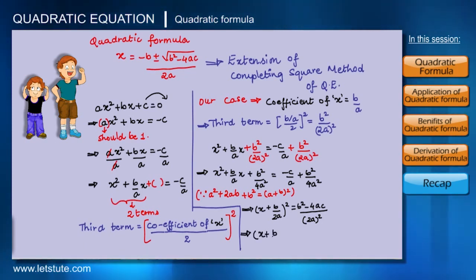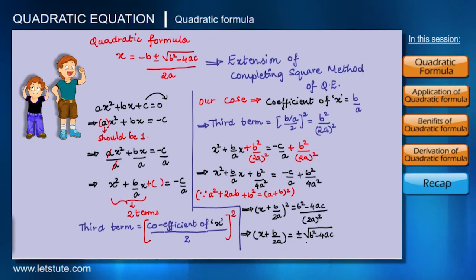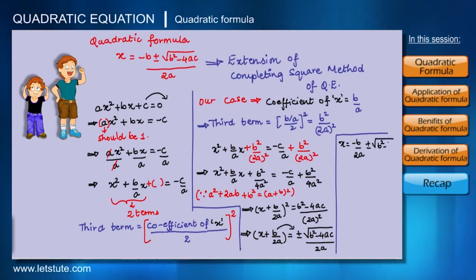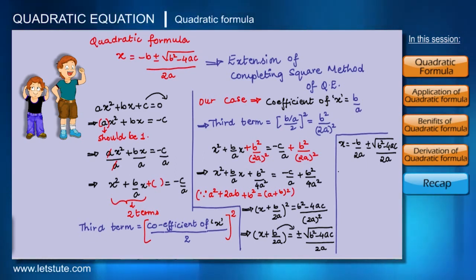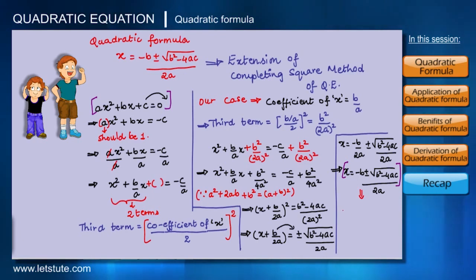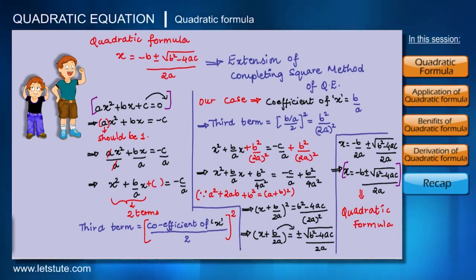Taking square root on both sides, we get X plus B/(2A) equals plus or minus square root of (B² minus 4AC) upon 2A. Taking B/(2A) to the other side, X equals minus B/(2A) plus or minus square root of (B² minus 4AC) upon 2A. Finally, the quadratic formula is: X equals minus B plus or minus square root of B² minus 4AC, all upon 2A.